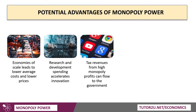The third argument is that the government might get a fiscal dividend from high tax revenues. High profits, in theory, can lead to higher tax revenues for the government — although of course there's the big issue of profit shifting, tax avoidance, and transfer pricing by multinational corporations in particular.